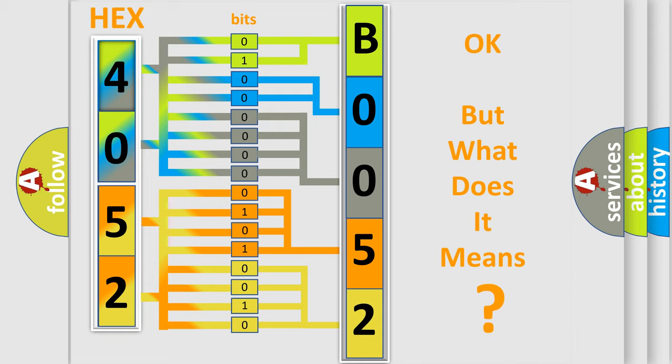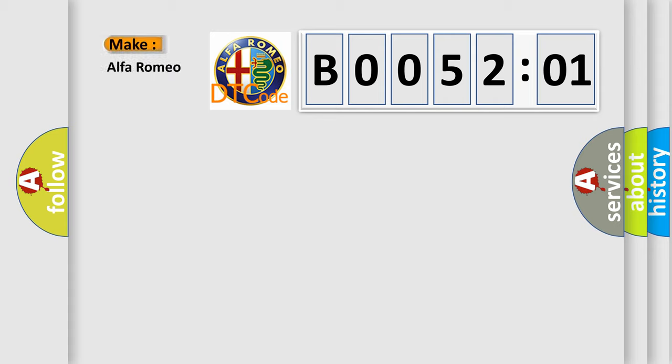The number itself does not make sense to us if we cannot assign information about it to what it actually expresses. So, what does the diagnostic trouble code B005201 interpret specifically, Alfa Romeo.